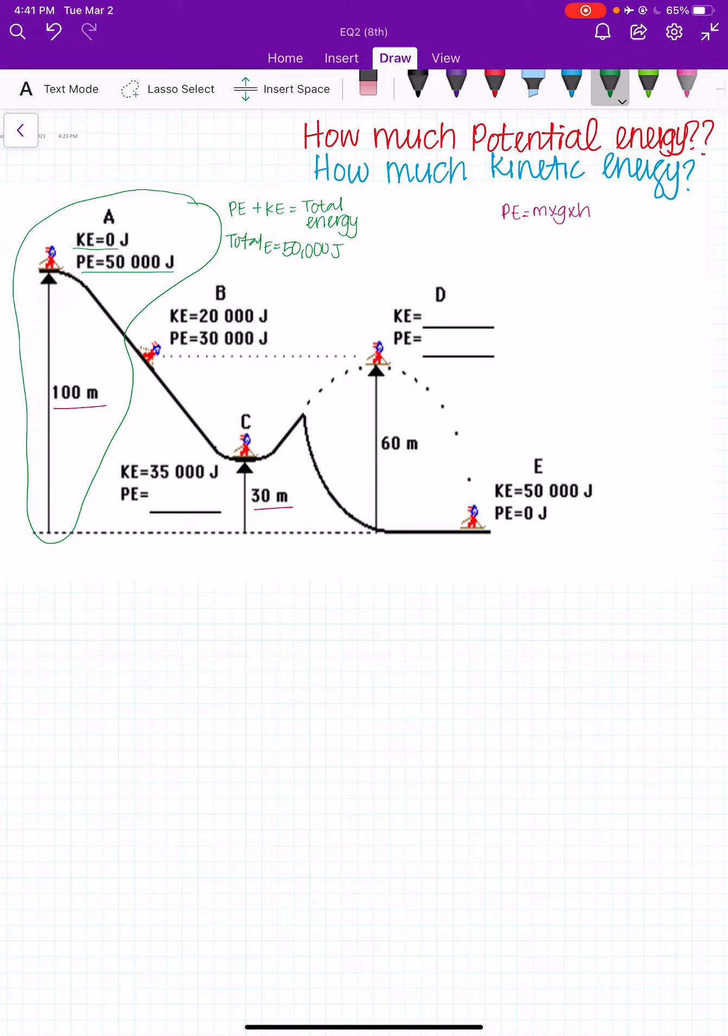Okay, so now let's work on question 2C, which says, use the data in the diagram to determine the amount of potential energy and kinetic energy the snowboarder has at position D. So we're going to calculate potential in red and kinetic in blue.